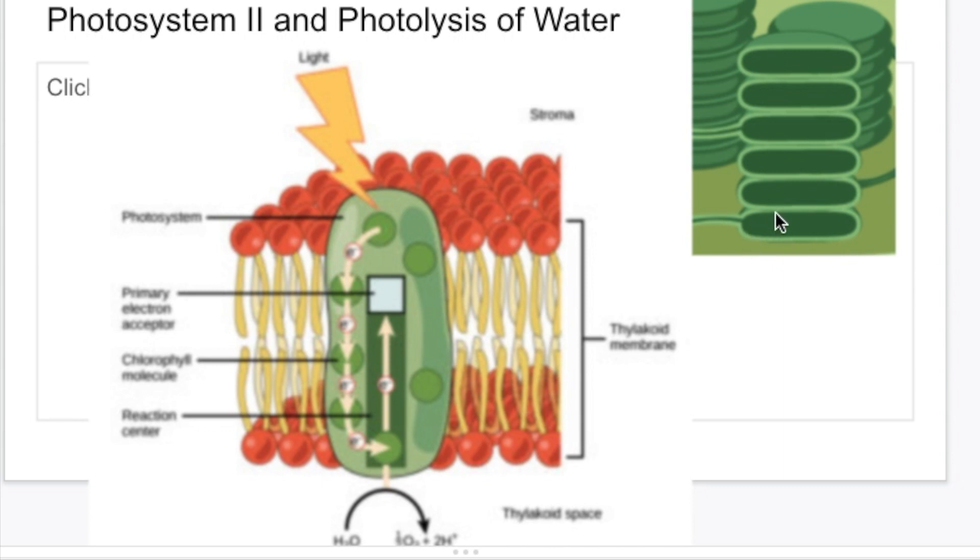If we were to zoom in into that membrane it would look something like this with these systems running through your typical fluid mosaic structure. These systems are made up of lots of chlorophyll molecules. This particular one is referred to as photosystem II. We start off with photosystem II because it was the second of two photosystems to be discovered but it's actually a good starting point to describe the process of photosynthesis. But the name photosystem II has remained.